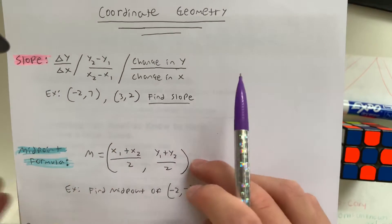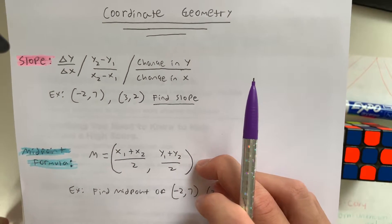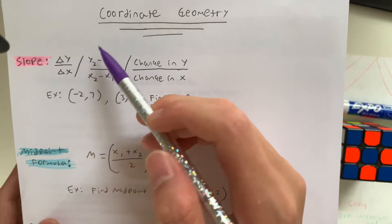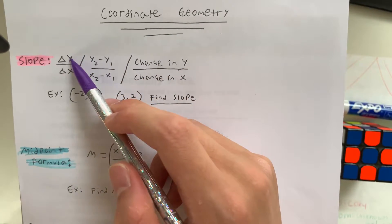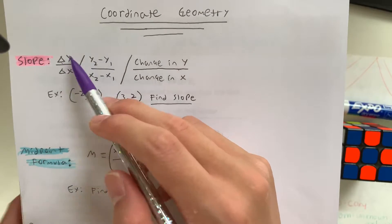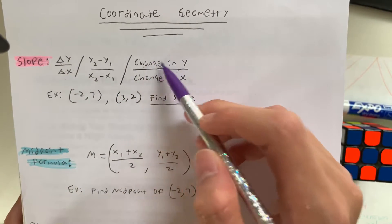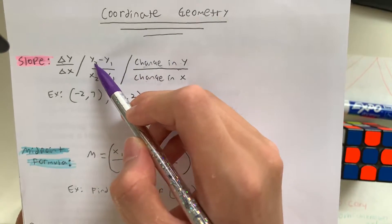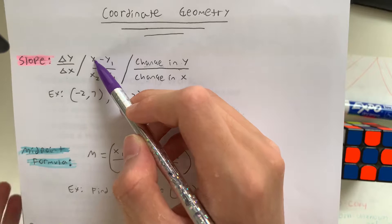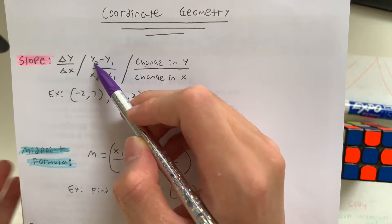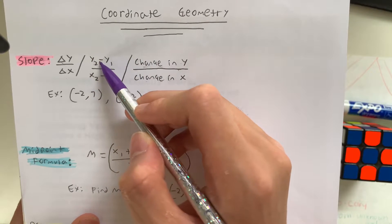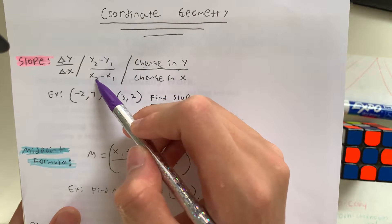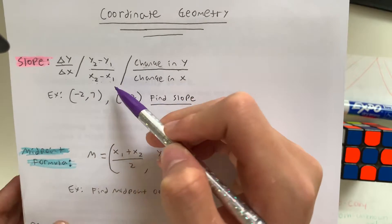So first we have slope, which is a topic you guys might learn in algebra. Basically you see triangle y over triangle x — that means delta y over delta x, and delta means the change. So basically it's the change in y over the change in x. You find the y value of the second coordinate minus the y value of the first coordinate, over the change in the x coordinates, so x2 minus x1.